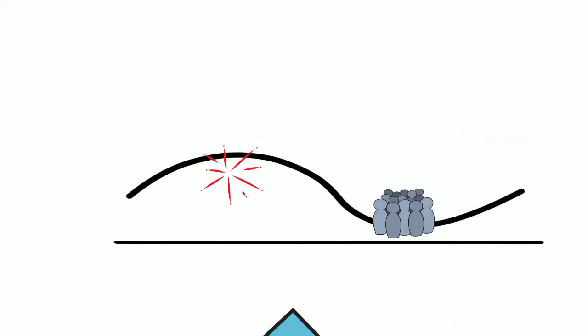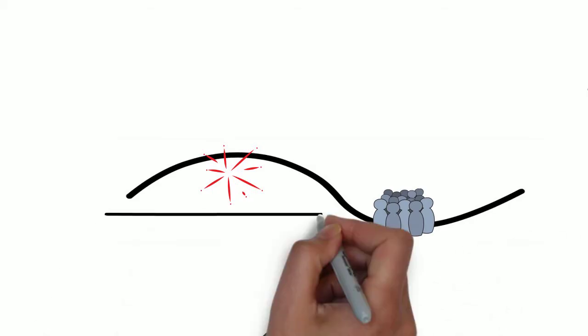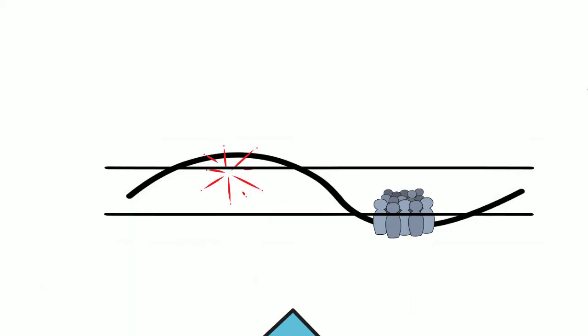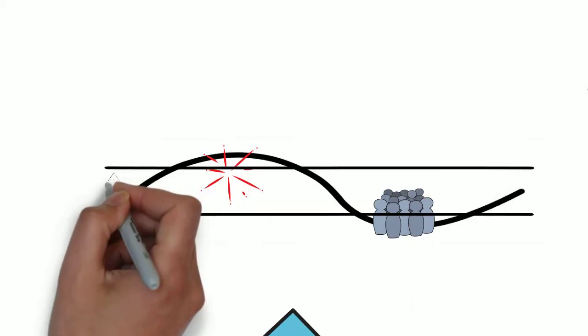We also know that experiences of trauma can change the size of someone's window of tolerance. Traumatic experiences can reduce the size of someone's window, thus reducing the size of their optimal zone.